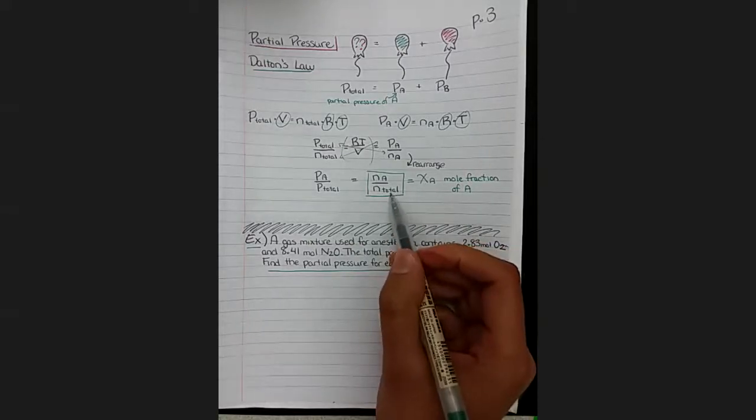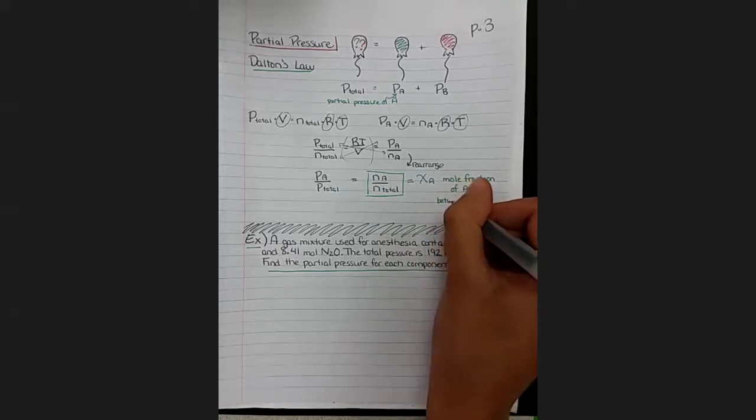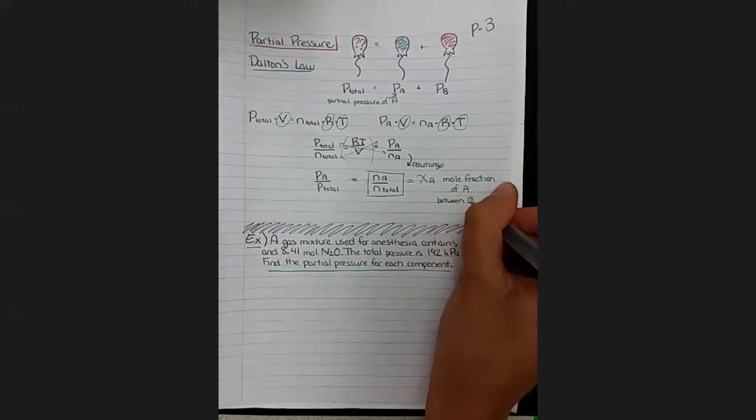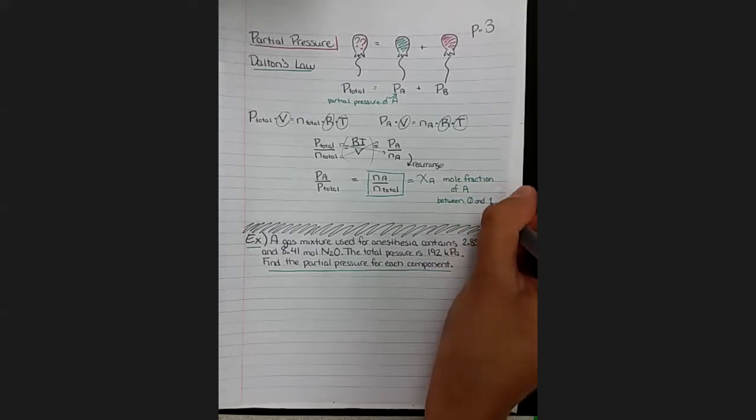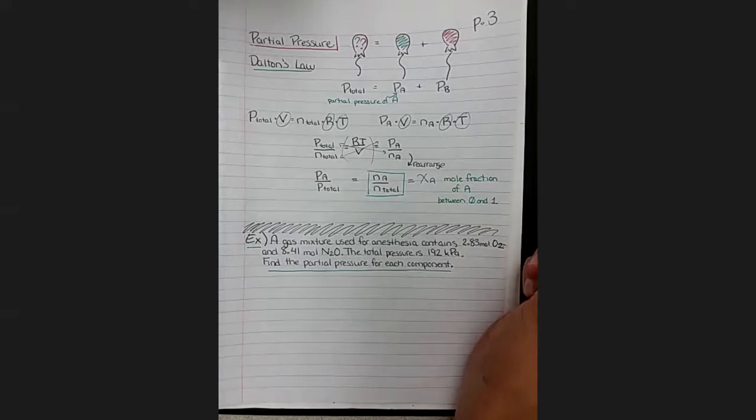Because this is a fraction, this is a ratio, it should be somewhere between zero and one. If it was zero, there would be no moles of A in the container. And if it was one, 100% of the container would be that compound.